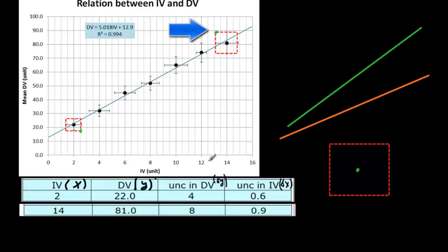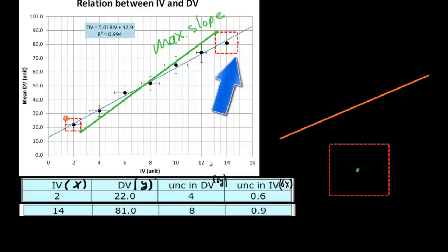That's the maximum slope that you get. And this here would be our line of maximum slope right there. Let's do the same thing with the minimum slope. The minimum slope will have to go from this top left-most corner right here to this bottom right-most corner. And this would be our line of minimum slope.